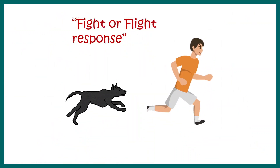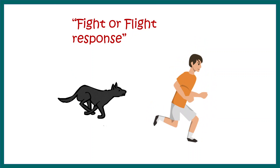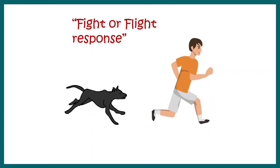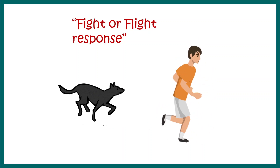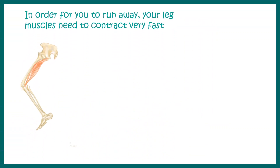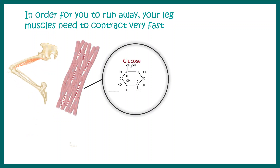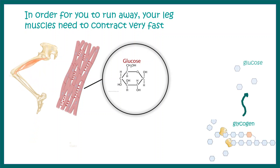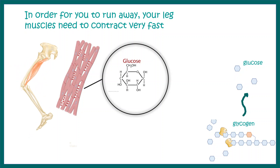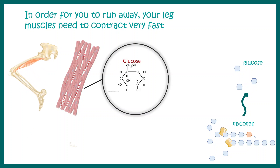Let's talk about the fight or flight response. For example, if a mad dog is chasing you and you have to run away, this is a stressful situation for your body. In this situation your muscles need to flex very quickly and need a lot of energy, which comes from glucose. Epinephrine and norepinephrine help in the breakdown of glycogen to produce glucose, thereby supplying a ready-made source of energy.